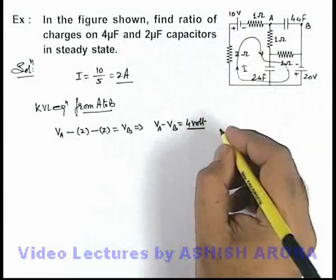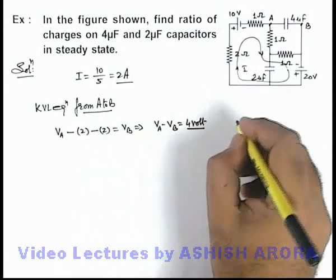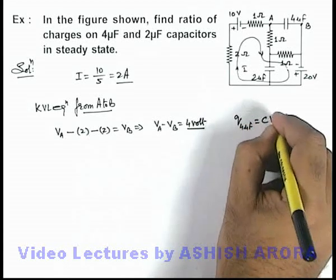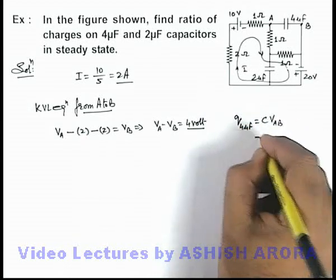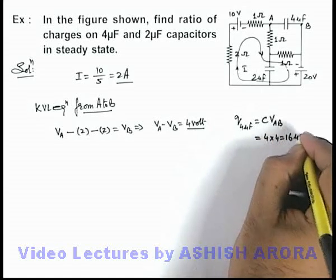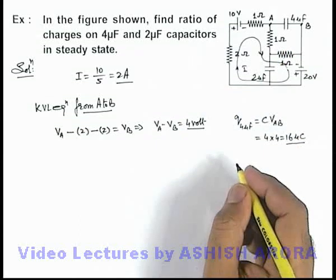This is the potential difference across 4 micro farad capacitor. That means the charge on 4 micro farad capacitor will be c v ay b. This can be calculated as 4 multiplied by 4, this is 16 micro coulomb, this is the charge on 4 micro farad capacitor.